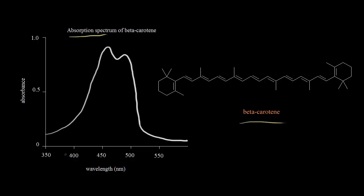The visible region starts at approximately 400 nanometers. To the left of that line would be the ultraviolet, the UV region of the electromagnetic spectrum, and on the right would be the visible region. We see that beta-carotene absorbs light with wavelengths of approximately 450 to 500 nanometers, and it absorbs strongly in the visible region.